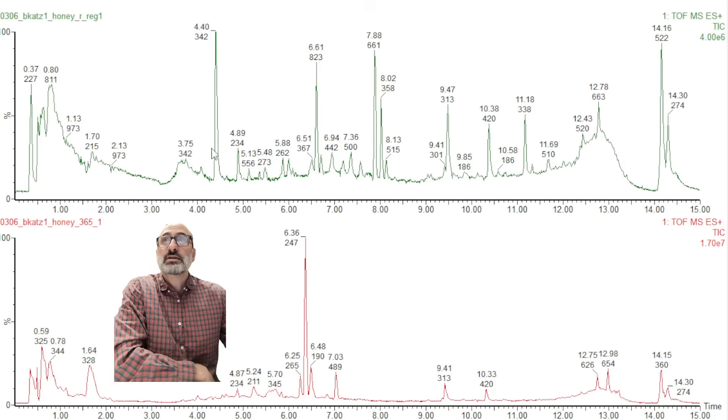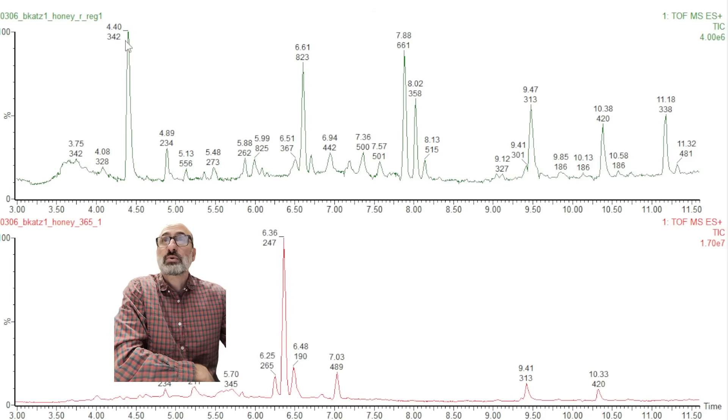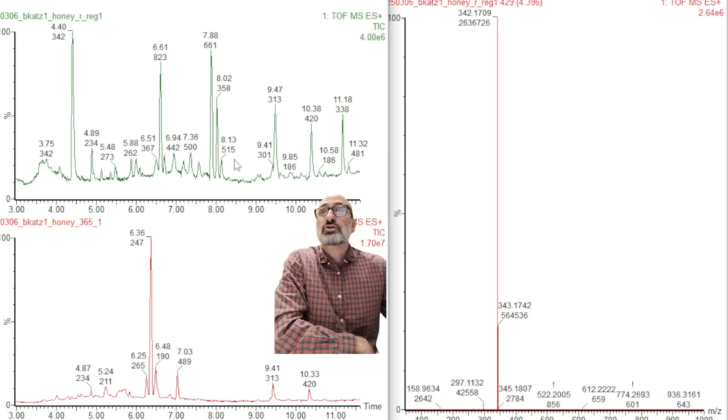But the biggest one I'm interested in is 342, the most intense peak. It's coming off in my analytical region here. So if we zoom in and look at this, we have, yeah, we got the 342 mass. That is definitely only in the royal honey.